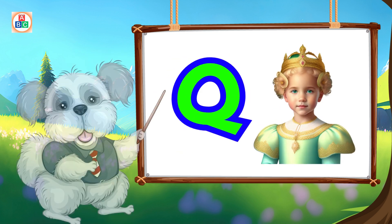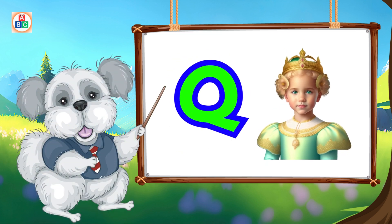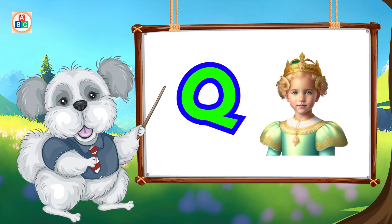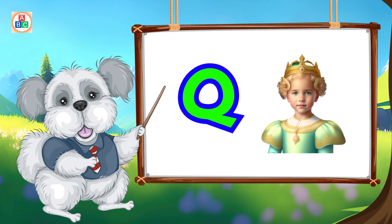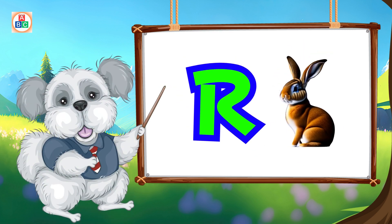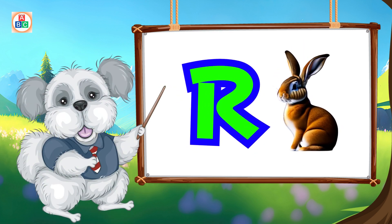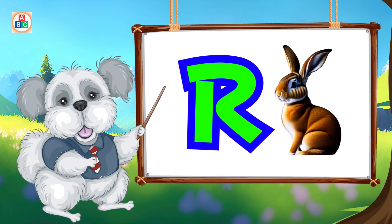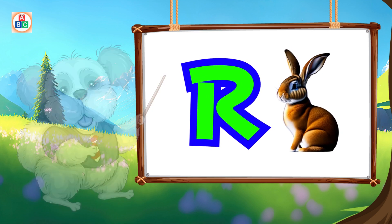Q is for queen, k-k-queen. R is for rabbit, r-r-rabbit.